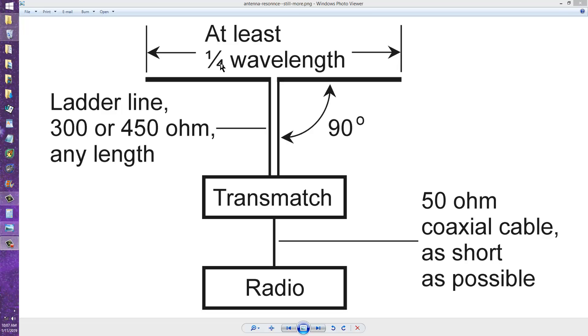You might be able to get out on the air and make contacts, but you're starting to get into pretty nebulous territory because the radiation resistance of such an antenna gets so low that the loss resistances can become significant, even with the best transmission lines available.